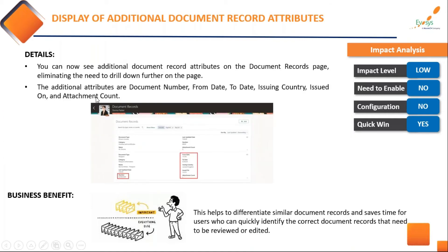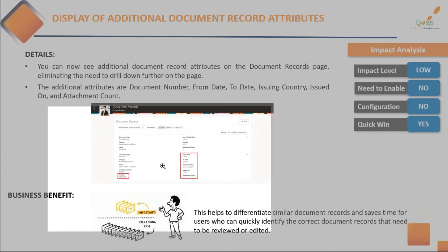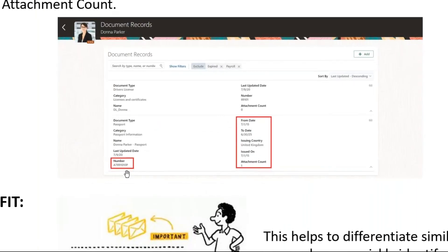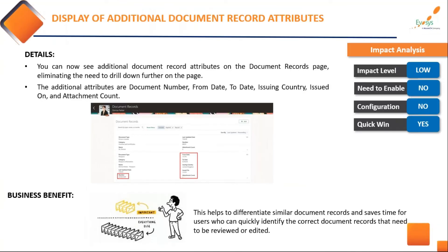Another enhancement on Document of Records is that you now see certain extra attributes on the page — document number, from date, to date, and issuing authority. This helps when you have similar names across categories of different document types; you can look at this additional information to identify the right document. It's an ease-of-use improvement for users working with this page.